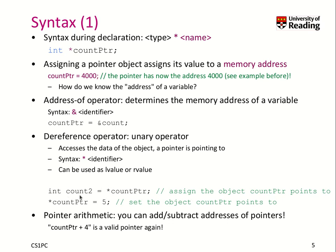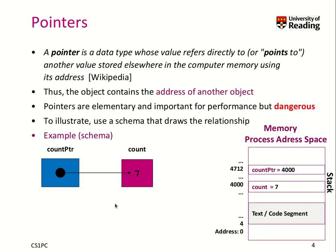You can use the dereference operator to assign a value — for example, assigning 7 to count2. You can also use it as an L-value, on the left-hand side of the equal sign. By writing star count_ptr equals 5, you change whatever count_ptr points to — in this example, you change count to become 5. So you change the value that the pointer points to, not the value of the pointer object itself.